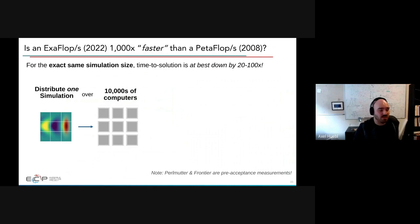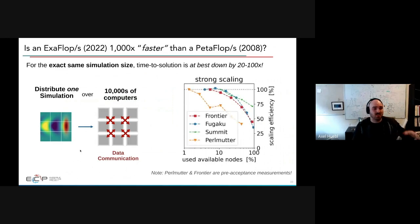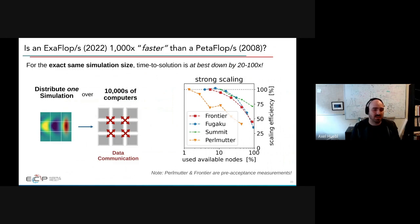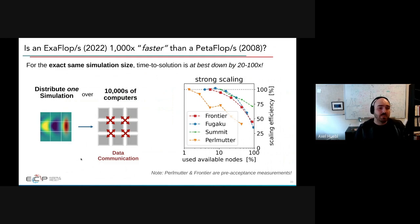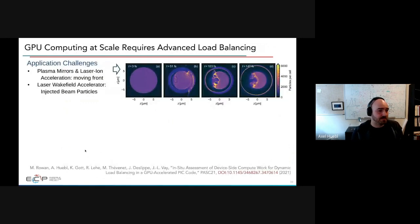In weak scaling — increasing both problem size and number of nodes proportionally — we stay close to the ideal scaling line across five orders of magnitude of node counts. In strong scaling — fixed problem, more computers — we can get one or two orders of magnitude speedup before underutilizing the machine. Weak scaling is our primary motivation: bigger problems with more physics, like 3D simulations that we could only do in 2D before, with new Monte Carlo effects added.